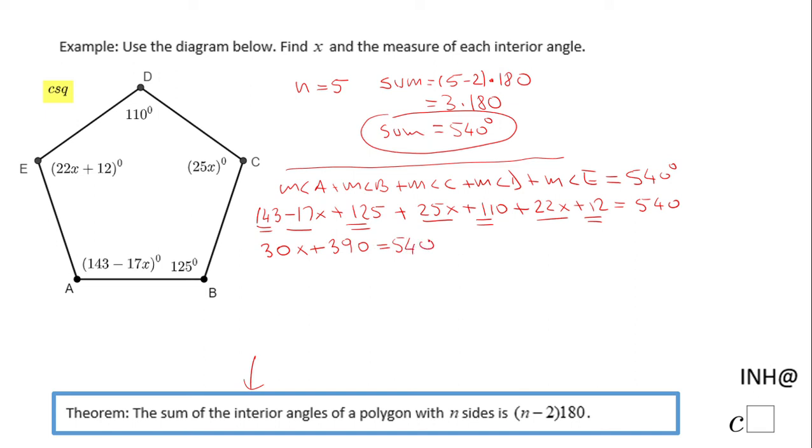In order to solve this equation for x, we're going to subtract 390 from both sides, and we end up with 30x = 150. We're going to divide by 30.